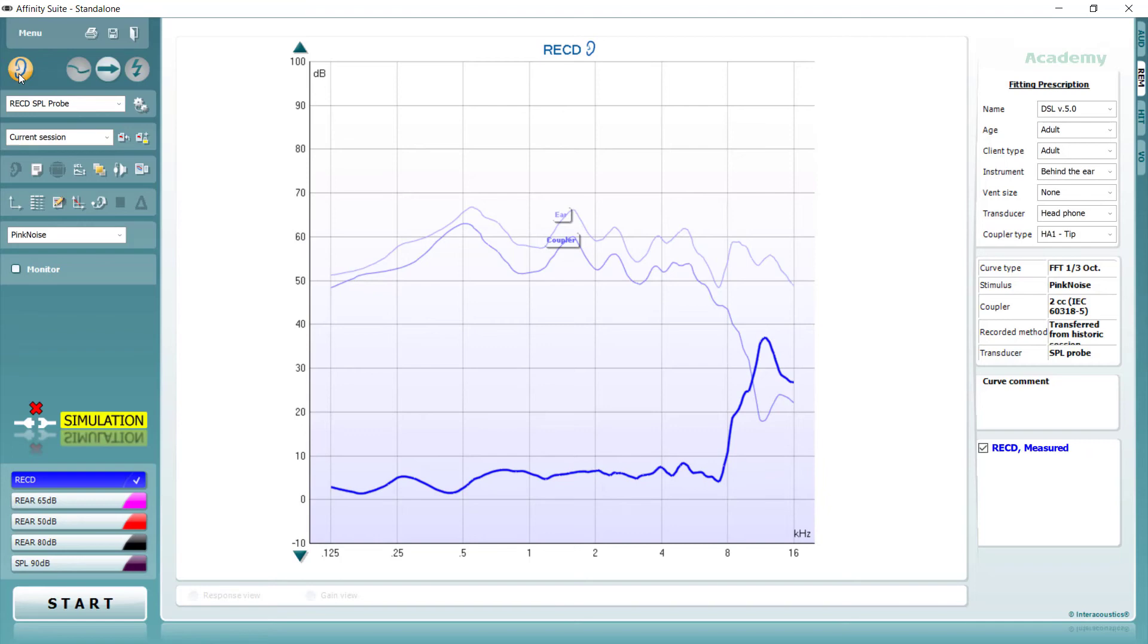Then, when the right ear is selected, you will see the left-sided RECD has been copied over but is still displayed in the original colour to make it clear which side the measurement was performed on. You can then verify the right-sided hearing aid using the left-sided RECD.